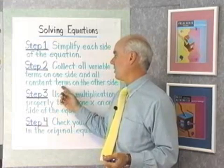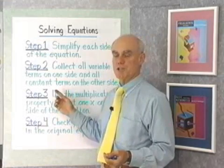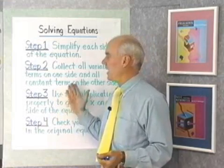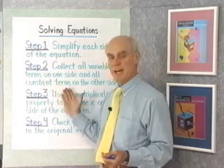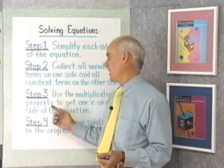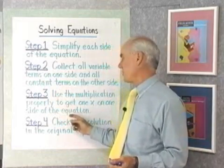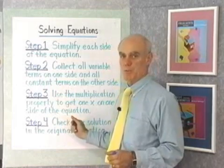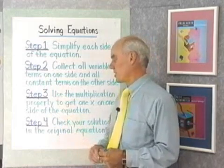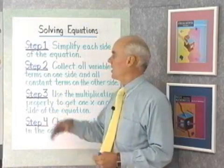Step 2: collect all the variable terms on one side of the equation and all the constant terms on the other. That step involves the addition property. Step 3: use the multiplication property to get just one x alone on one side of the equation. Step 4: check your solution in the original equation.